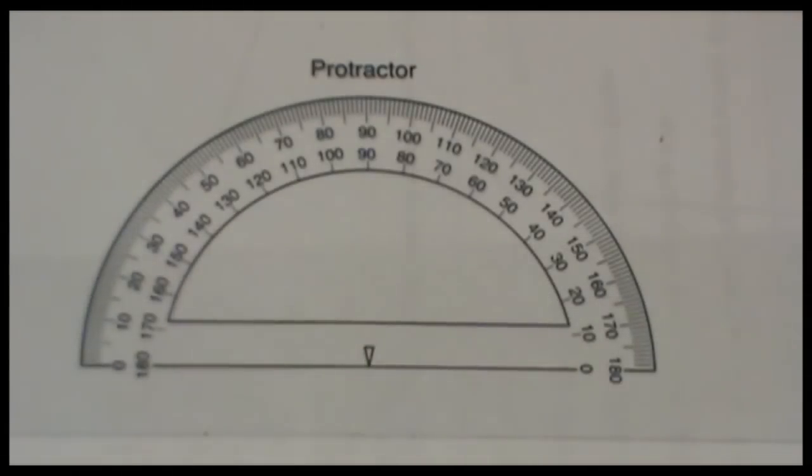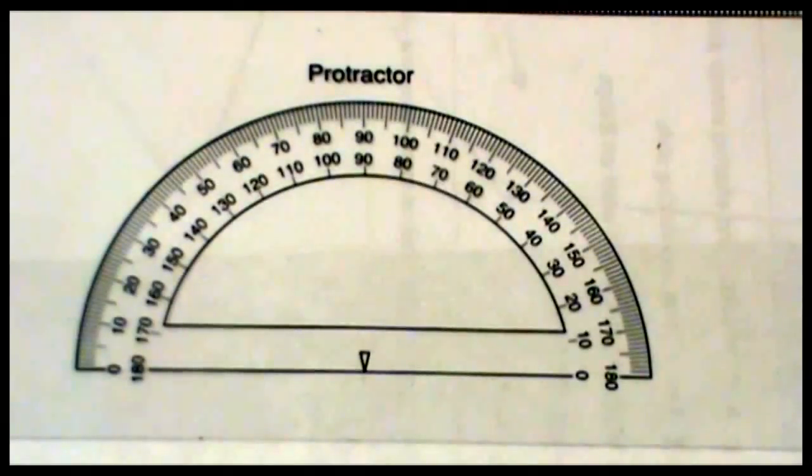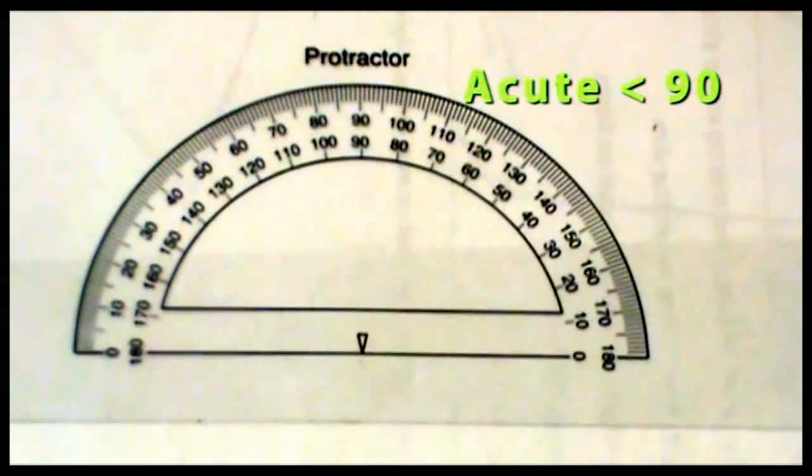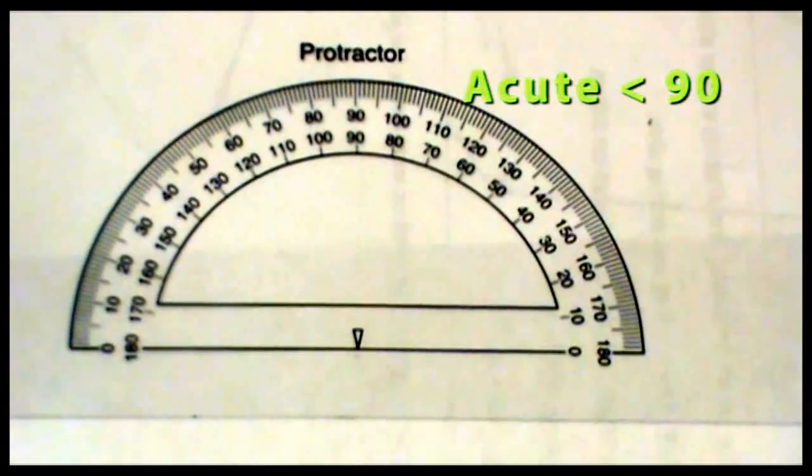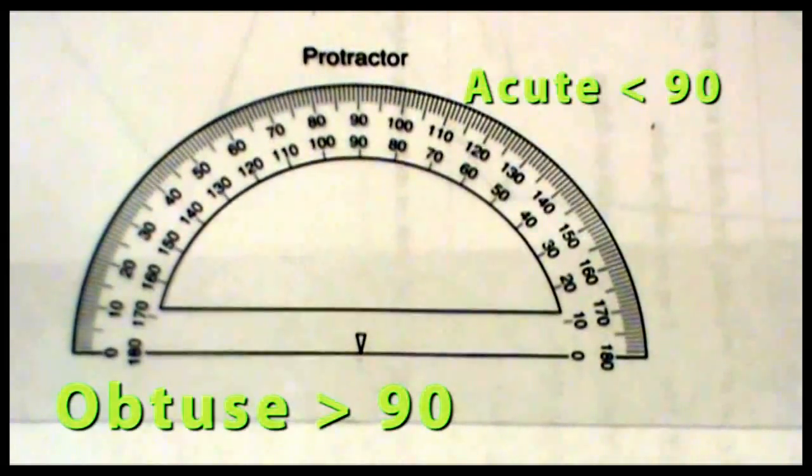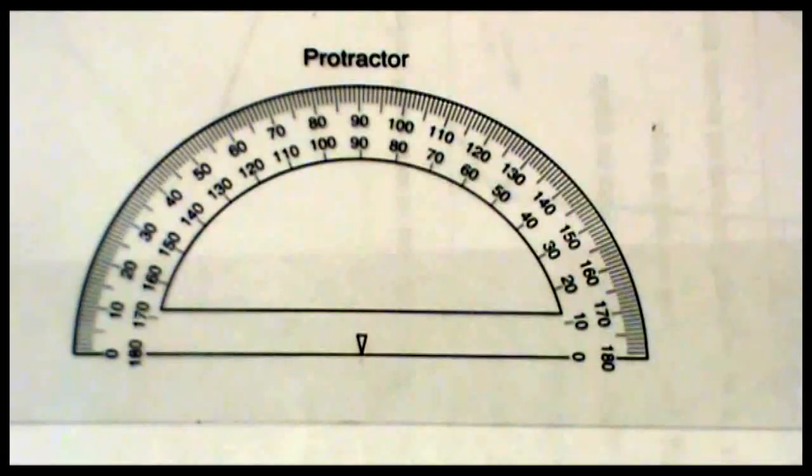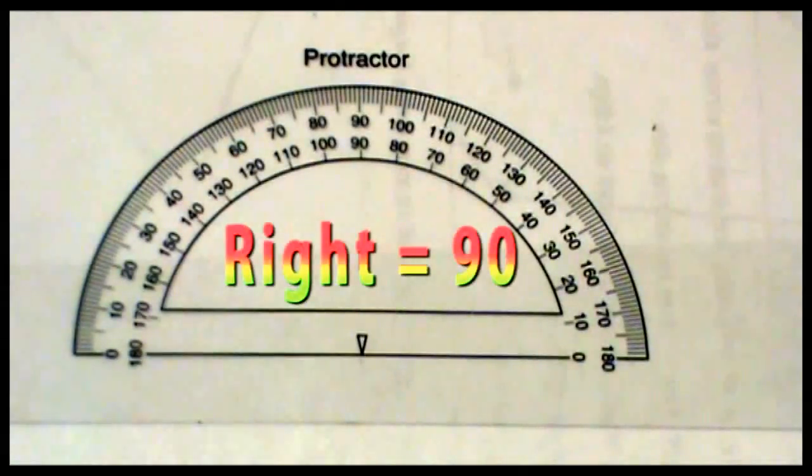This quick video is going to show you how to measure using a protractor. We've learned in the past that acute angles are less than 90 degrees, obtuse angles are more than 90 degrees, and a right angle is exactly 90 degrees.